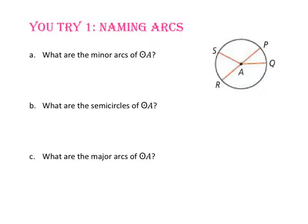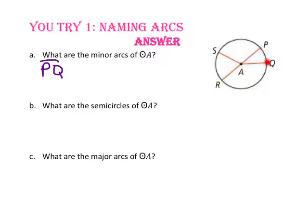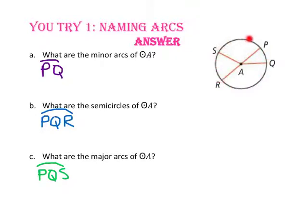Pause the video and do U-try number 1. Since U-try number 1 asks us to list the minor arcs, semicircles, and major arcs of circle A, we are going to start with point P and move to point Q. Since this is less than 180 degrees, arc PQ is a minor arc. Starting from point P, passing point Q and moving on to point R, we have exactly 180 degrees, so we have a semicircle, arc PQR. Starting at point P and moving around to point S, we have more than 180 degrees, so we have a major arc, arc PQS. Since starting at point P and passing points Q, R, and S sends us back to point P, we are going to move on and start with point Q.